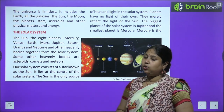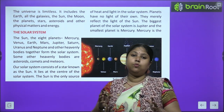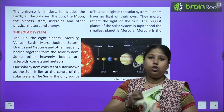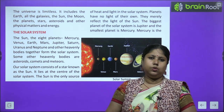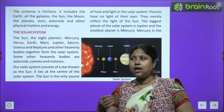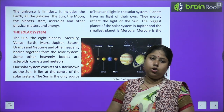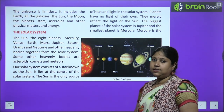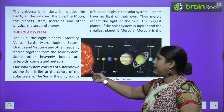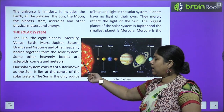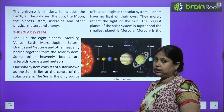Yani, Solar System mein ye aathon grahe, ye aathon planets, Sun aur jo chote bade aur bhi doosre heavenly bodies rehte hain — jaise stars, moons and more — ye sab mila ke Solar System ko banaate hain. Some other heavenly bodies are asteroids, comets and meteors.